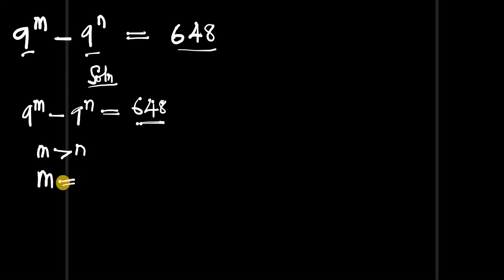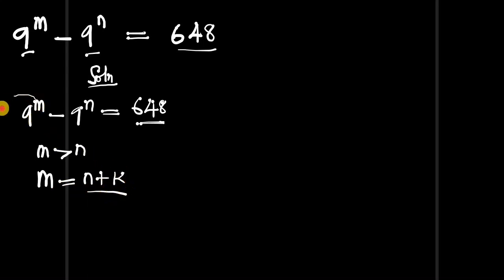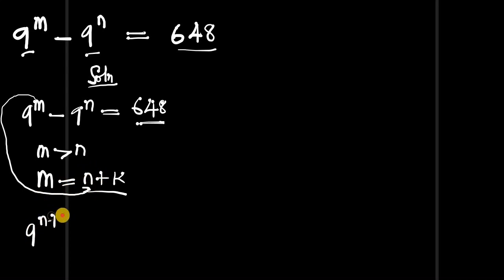Since m is greater than n, the only way we can relate m to n is to attach a constant k, so that m equals n plus k. We are going to replace m with n plus k, so our equation becomes: 9 to the power of n plus k minus 9 to the power of n equals 648.